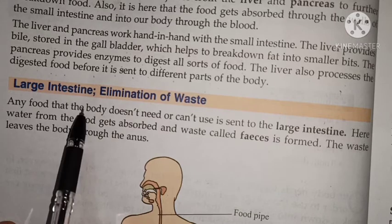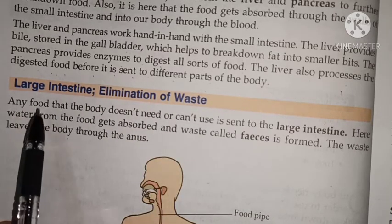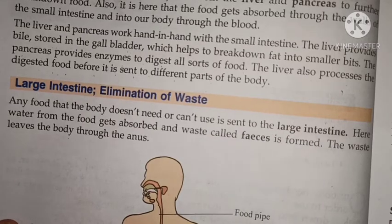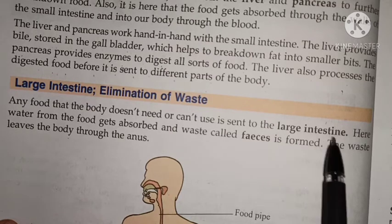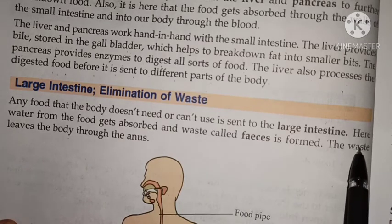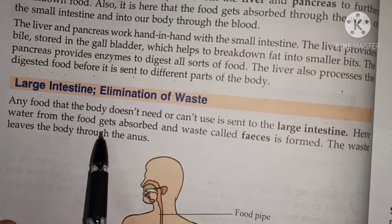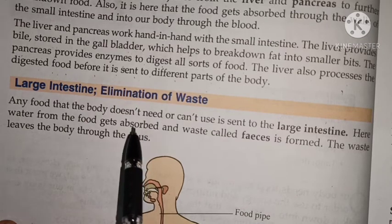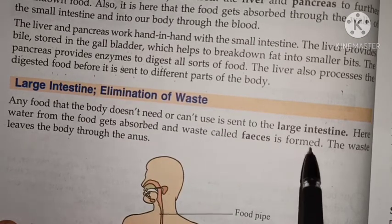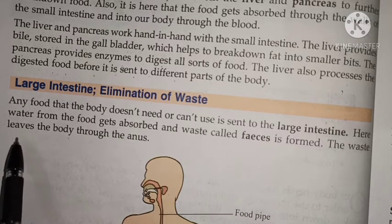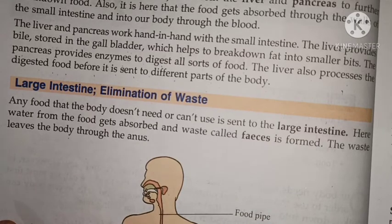Next is large intestine — elimination of waste. Any food that the body doesn't need or can't use is sent to the large intestine. Here, water from the food gets absorbed by the body, and waste is formed. The waste leaves the body through the anus.